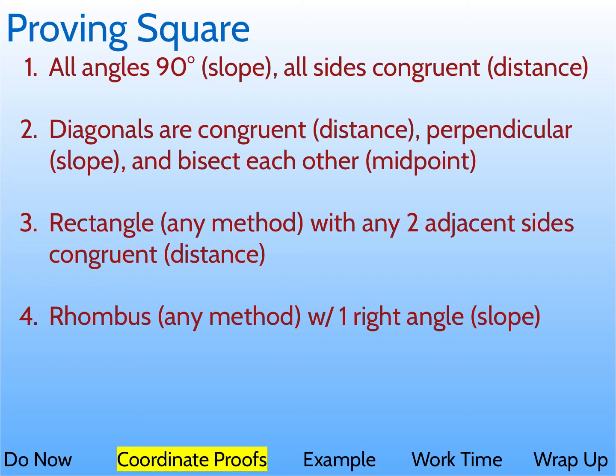Okay, today we're going to prove that a quadrilateral is a square, and you can do that by proving that all angles are 90 degrees, which would involve finding the slope, kind of like we did with the rectangle, and all the sides are congruent, which would be the distance formula.